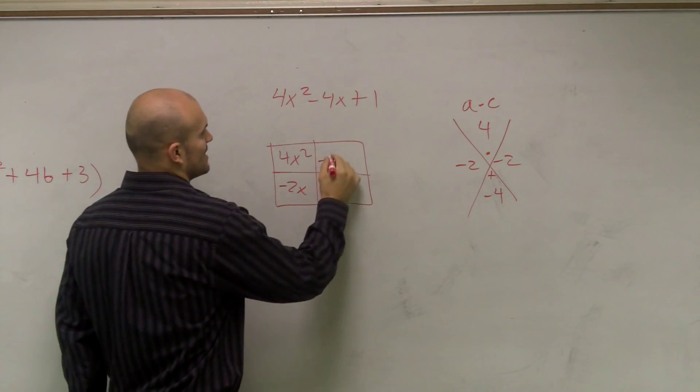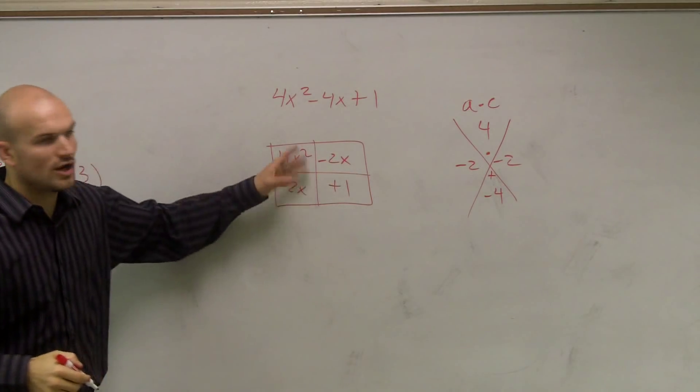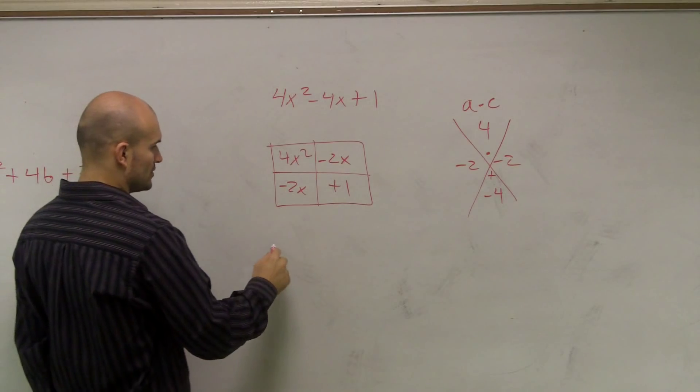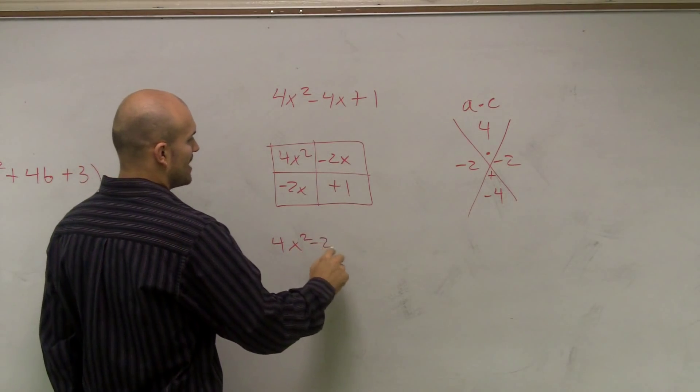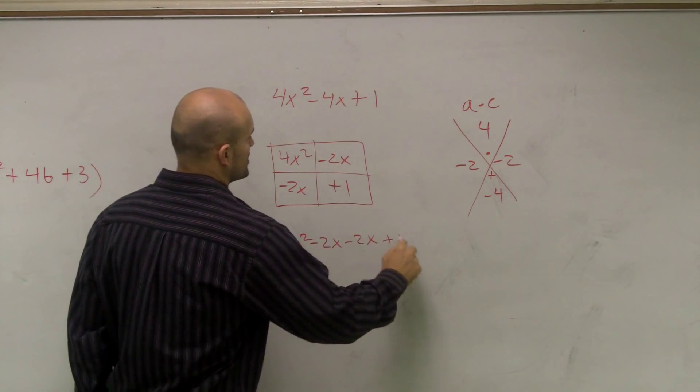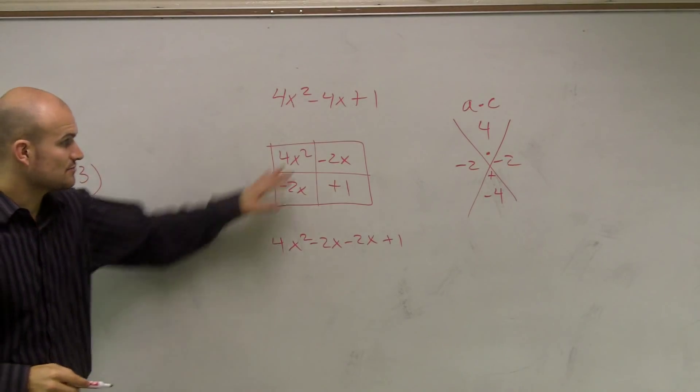So I can say this is going to be negative 2x and this is negative 2x. Or if I wrote out that total area, it would look like this: 4x² - 2x - 2x + 1, right? If I just wrote all this out...